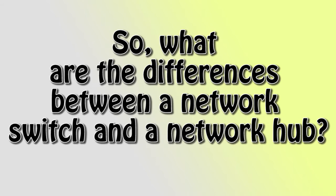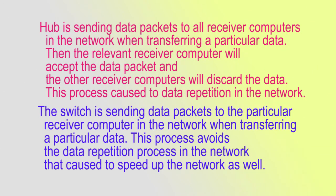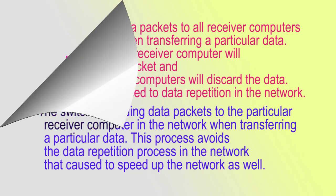So, what are the differences between a network switch and a network hub? A hub sends data packets to all receiver computers in the network when transferring data. The relevant receiver computer will accept the data packet and the other computers will discard it. This causes data repetition in the network. A switch sends data packets only to the particular receiver computer, which avoids data repetition and speeds up the network.